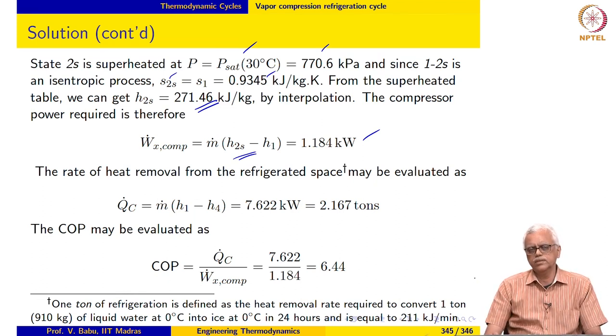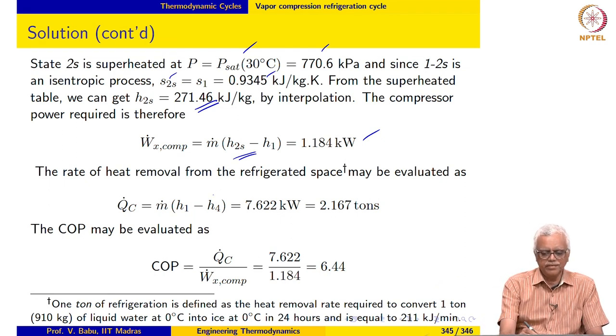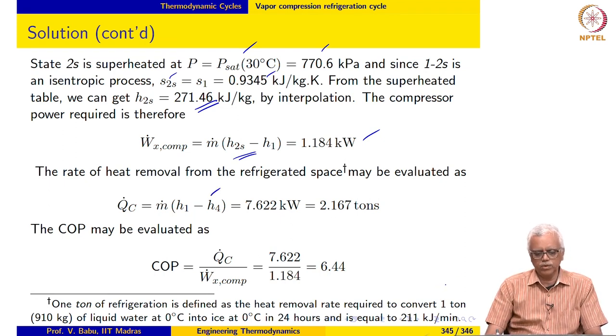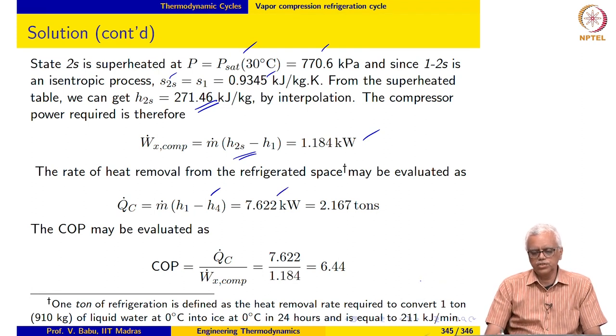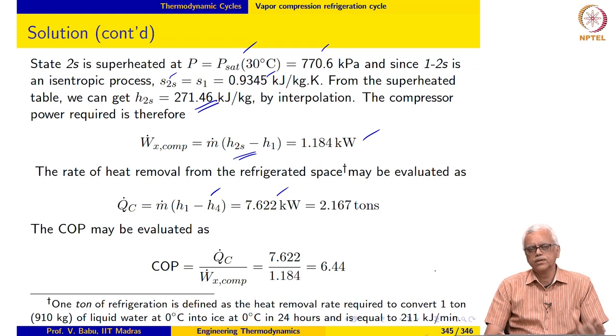Of course, the most important performance parameter in the case of a refrigerator is the amount of heat that is removed from the refrigerated space. We may evaluate that as m dot times H1 minus H4 and that comes out to be 7.622 kilowatts.